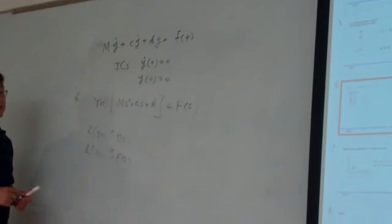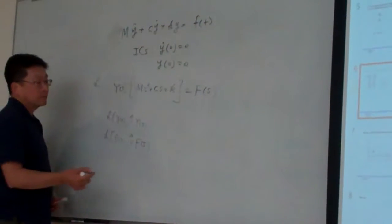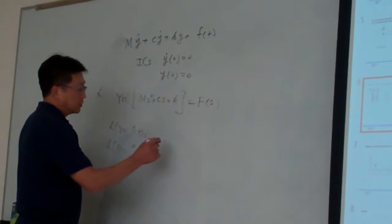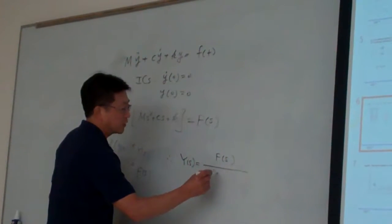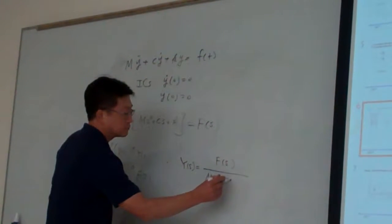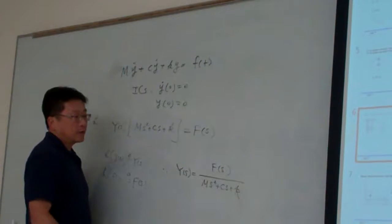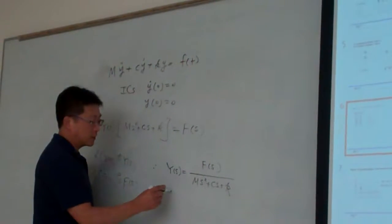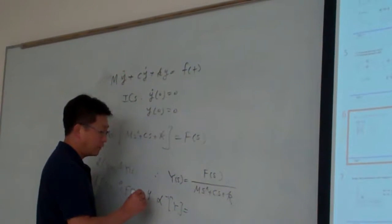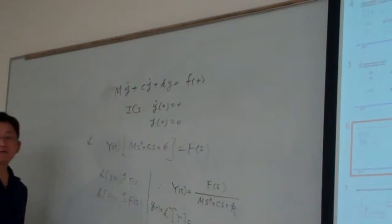We utilized two definitions: the Laplace transform of Y of T is defined as Y of S, and the Laplace transform of the force function is F of S. So therefore, Y of S equals F of S over M S squared plus C S plus K. If I give you any function F of S, you should be able to take the inverse Laplace to get Y of T.